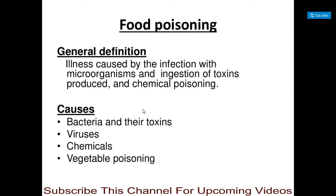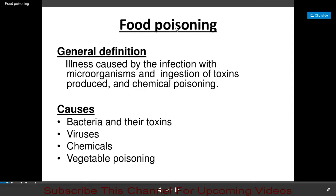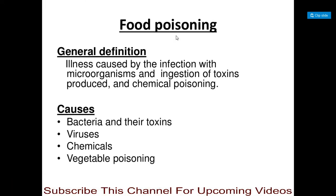If foods get contaminated with different types of pathogenic microorganisms, or if those foods consist of toxins produced by these pathogenic microorganisms and such food is consumed by a human being, it causes illness. Such illness caused after the ingestion of contaminated food is called food poisoning. The causes include bacteria and their toxins, viruses, chemicals, as well as vegetable poisoning.